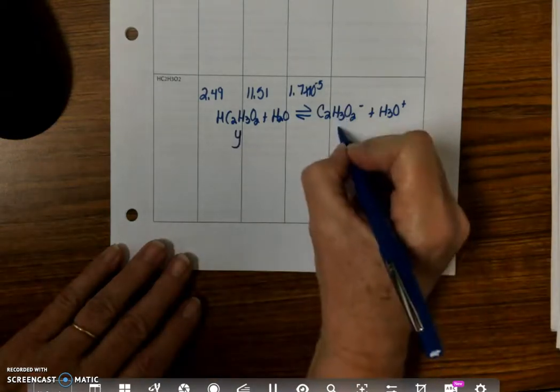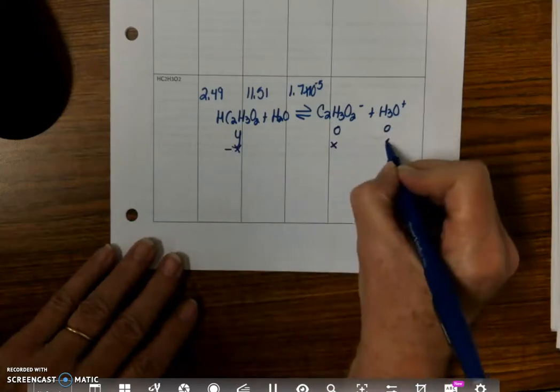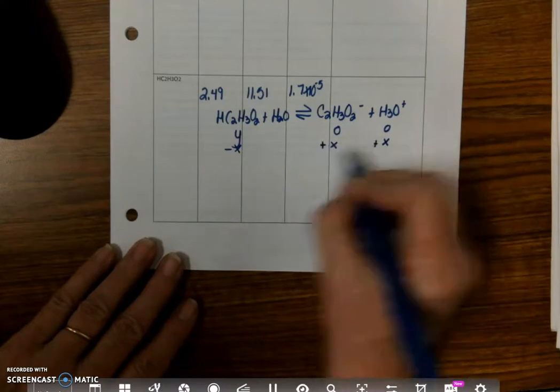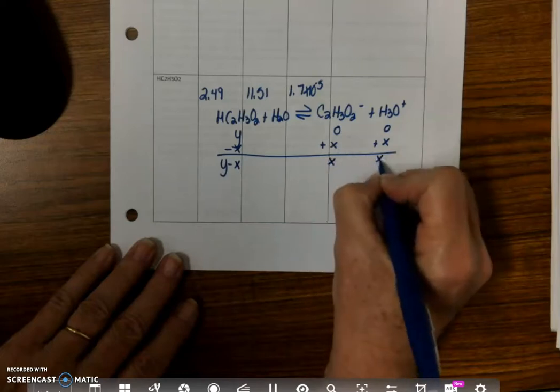I'm going to call that Y. This is 0, and this is 0. Then I have minus X, X plus X, and plus X. Okay, that gives me Y minus X, X, and X.